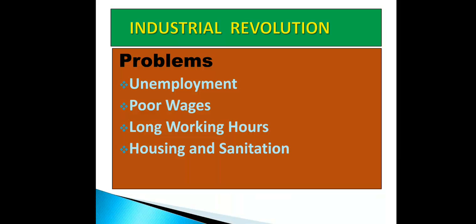Workers had to work for 12 hours, 15 hours, sometimes 16 hours. The last problem is housing and sanitation. The condition of their living was very bad. They lived in very unhealthy, unhygienic places in small houses. With urbanization, housing and sanitation problems were growing. These are the problems brought by the industrial revolution.